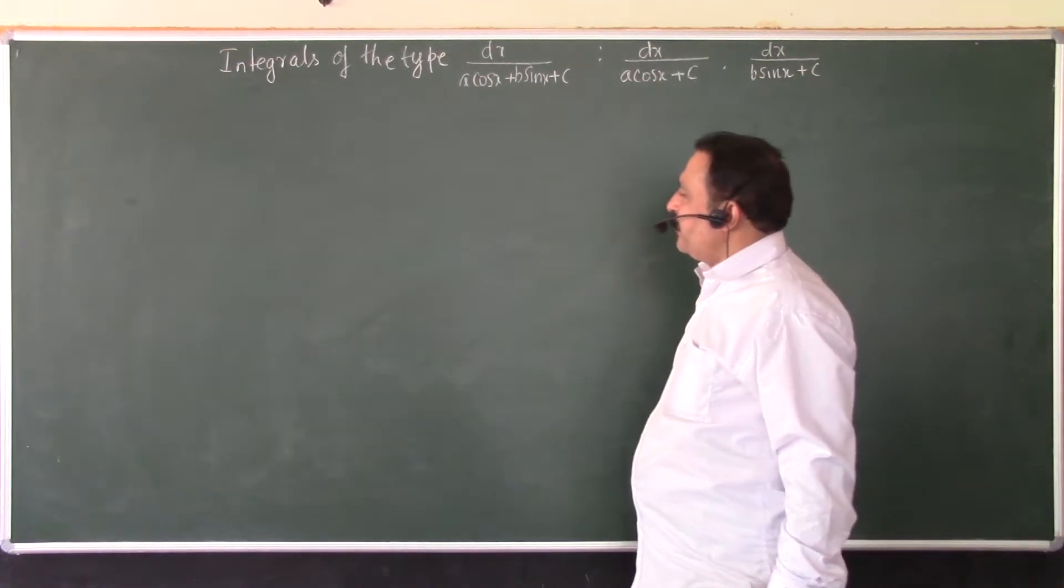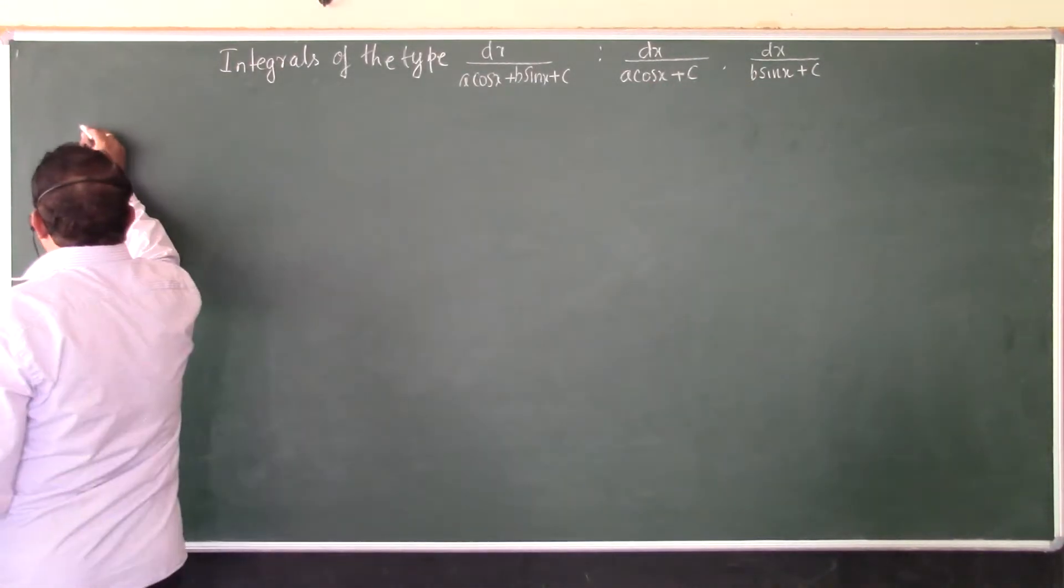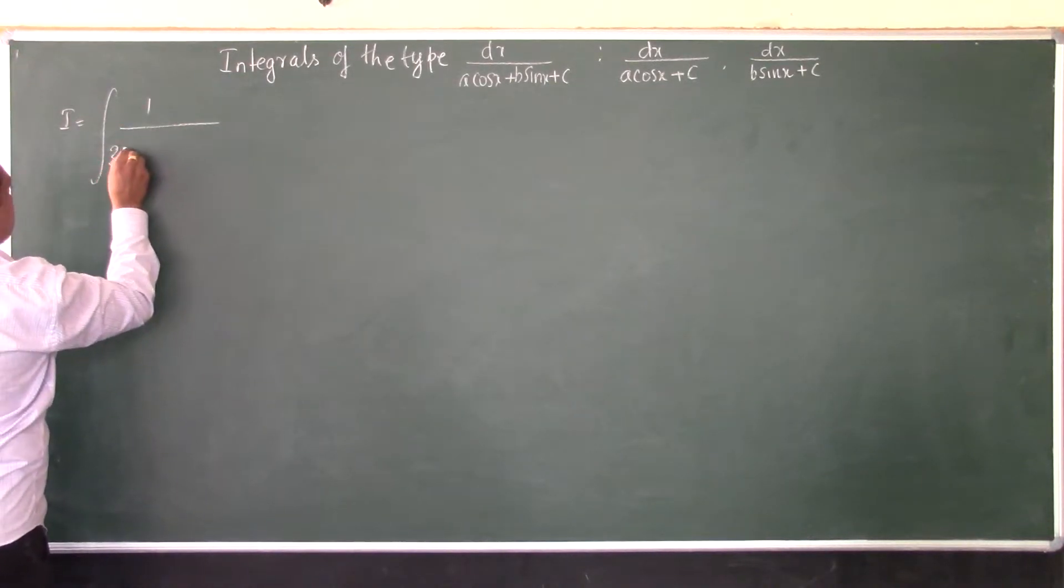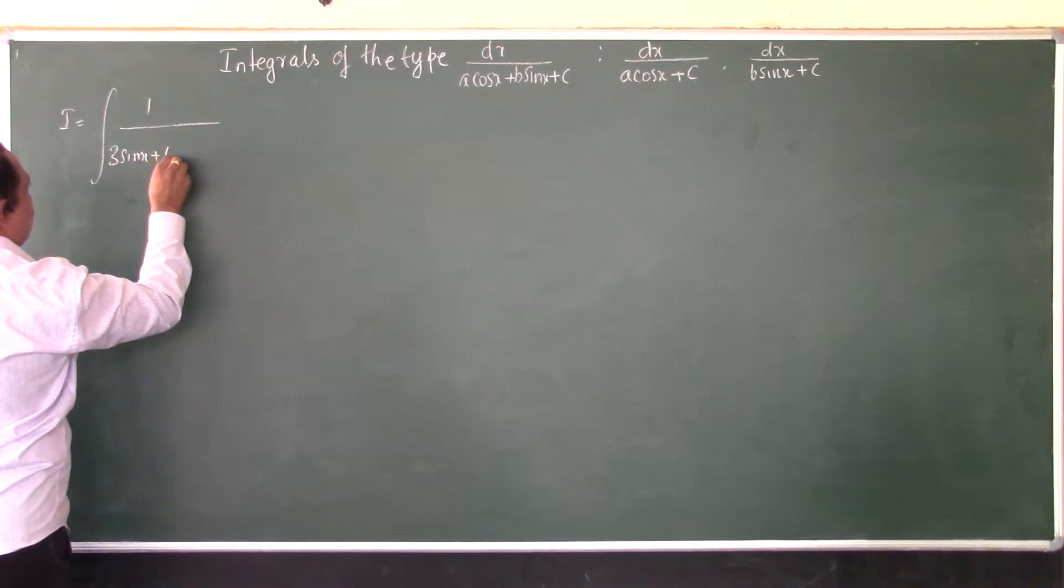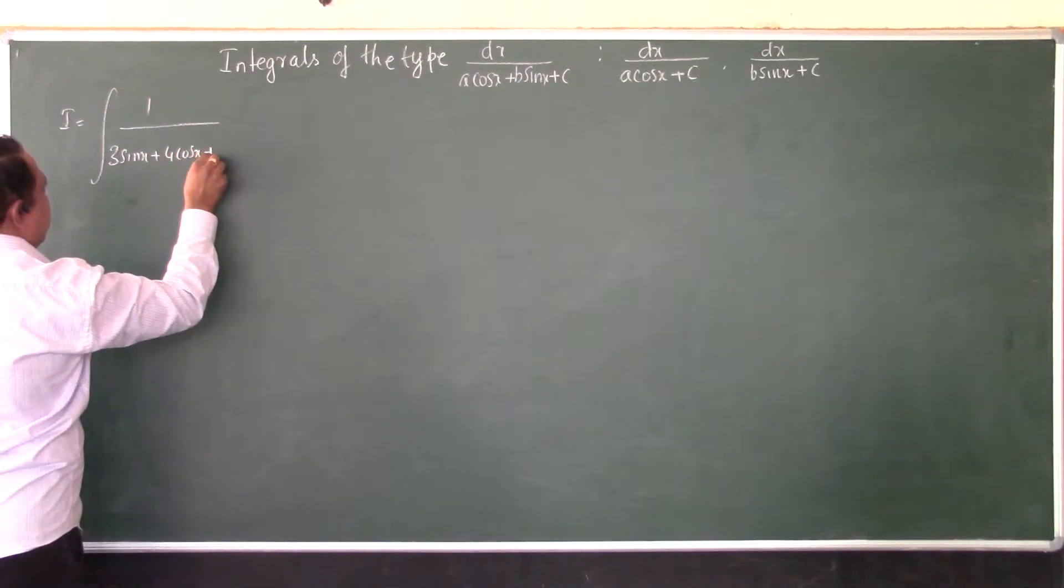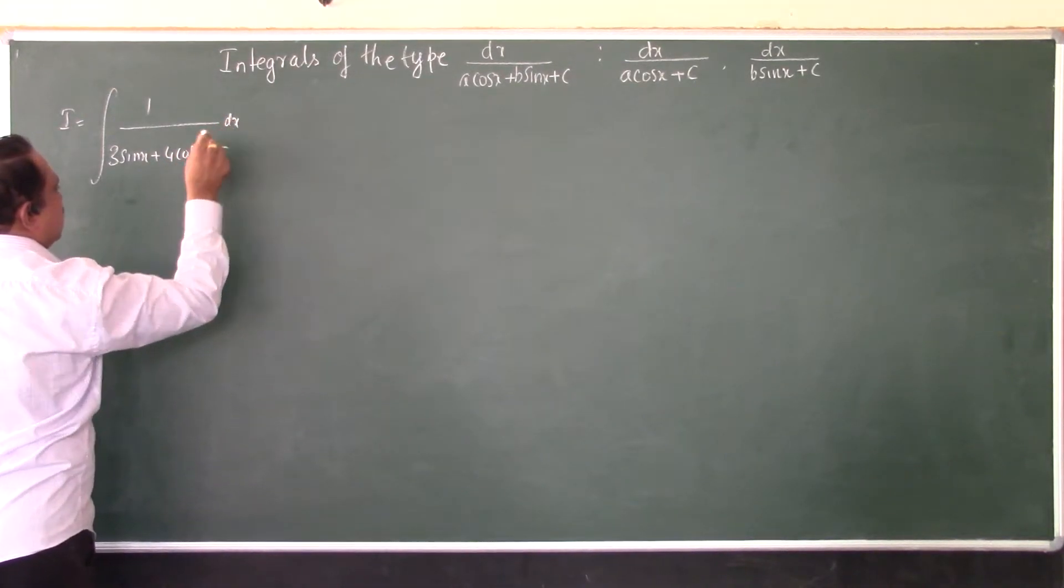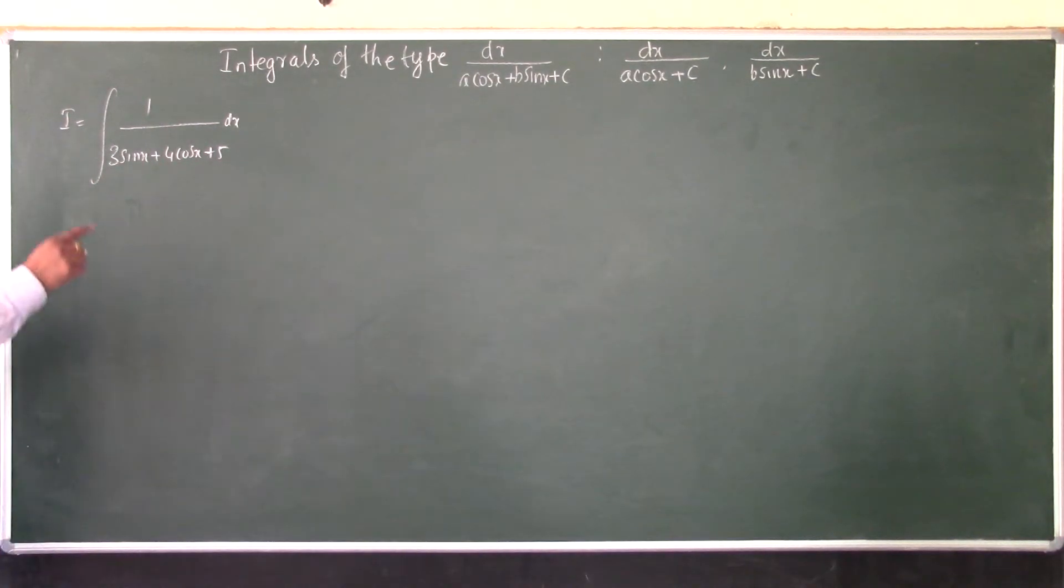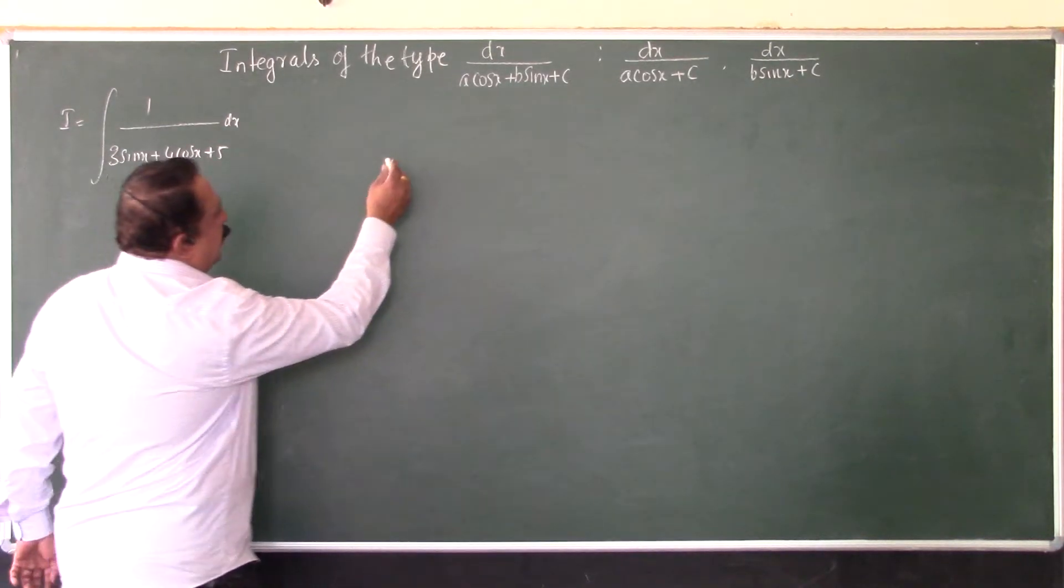If we see a problem like this: I equals integral 1/(3 sin x + 4 cos x + 5) dx, you can easily match this problem with this type and proceed by the actual method. The method is: put tan(x/2) equals t and differentiate.